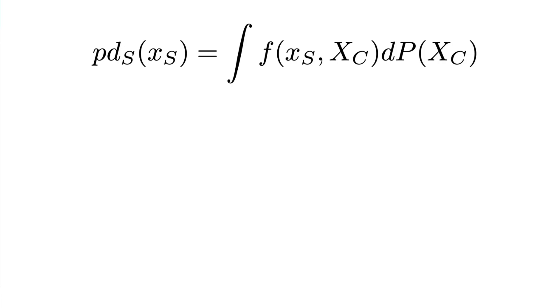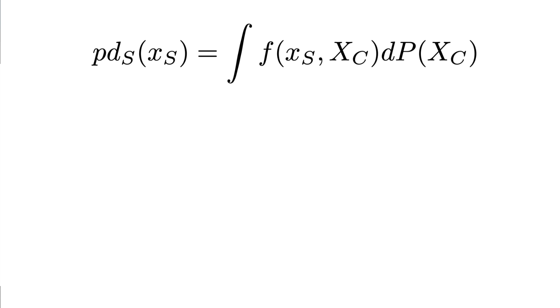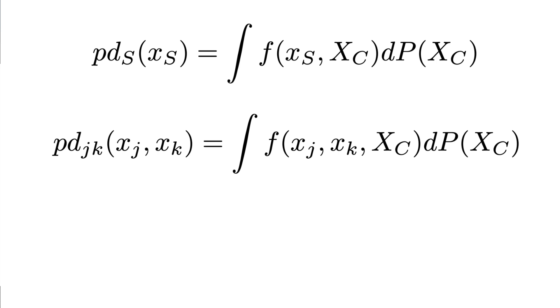Let's move on to a more formal explanation. We start with the formula for the partial dependence function. S is a set of features and C is the set of features excluding those in S. To find the PD function of S, we integrate our model function with respect to the probability of observing the values in set C. Suppose S consists of two features, J and K — this equation gives the joint PD function. The H-stat compares this PD to the same PD under the assumption that there is no interaction.